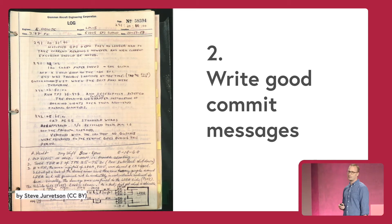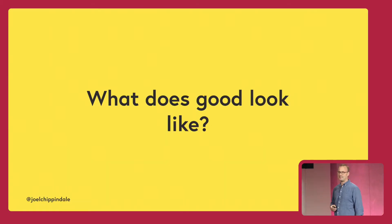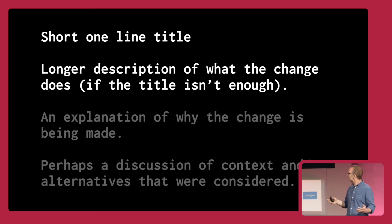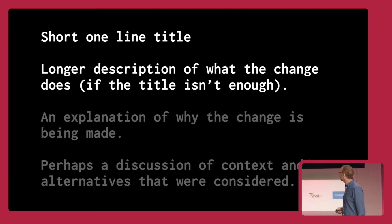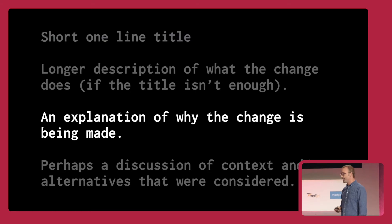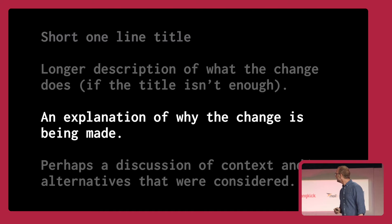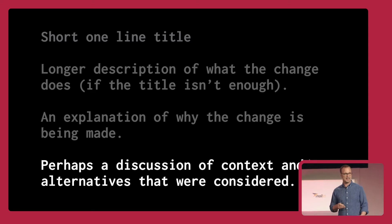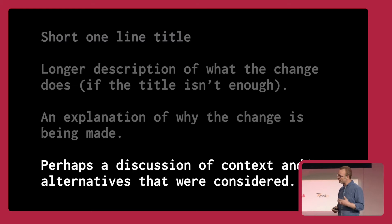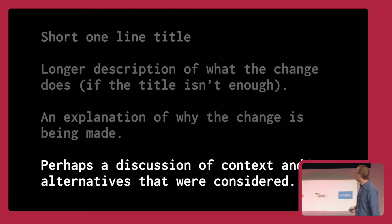Second principle: write good commit messages. So I'll take you through a little template to give you an idea of what I mean. A short one-line title, because you get your commits in lists, and a longer description if you need to. An explanation of why the change is being made — if people want to know how they can change this in future, they need to know what you're intending. And lastly, when you make this commit, you know more about why you're making this change and how you're fixing or improving this thing than anyone else ever will. So it can be useful to outline some of the context or the alternatives you considered.